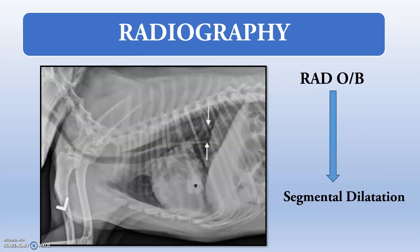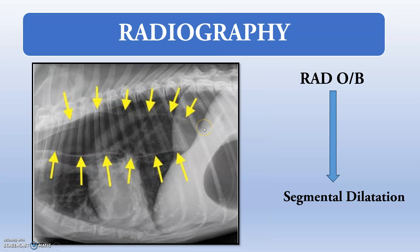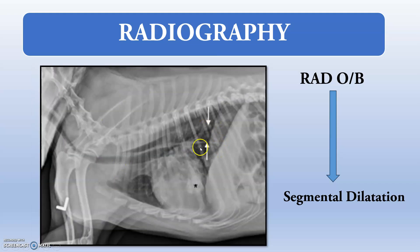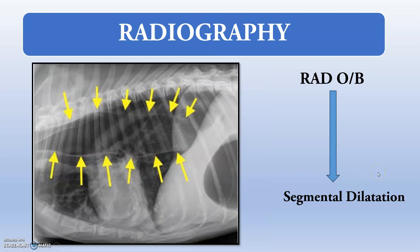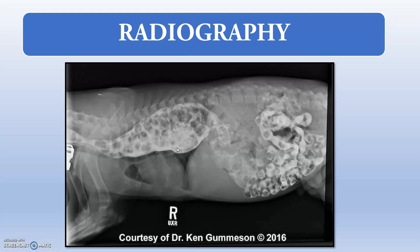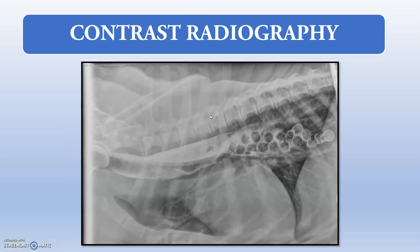A baseline cortisol concentration test and T4 concentration test can also be performed. For radiography, you can appreciate dilatation of the esophagus prior to the diaphragm, with segmental dilatation visible. Contrast radiography using barium sulfate is also used and you can very well appreciate the contrast agent outlining the esophagus.